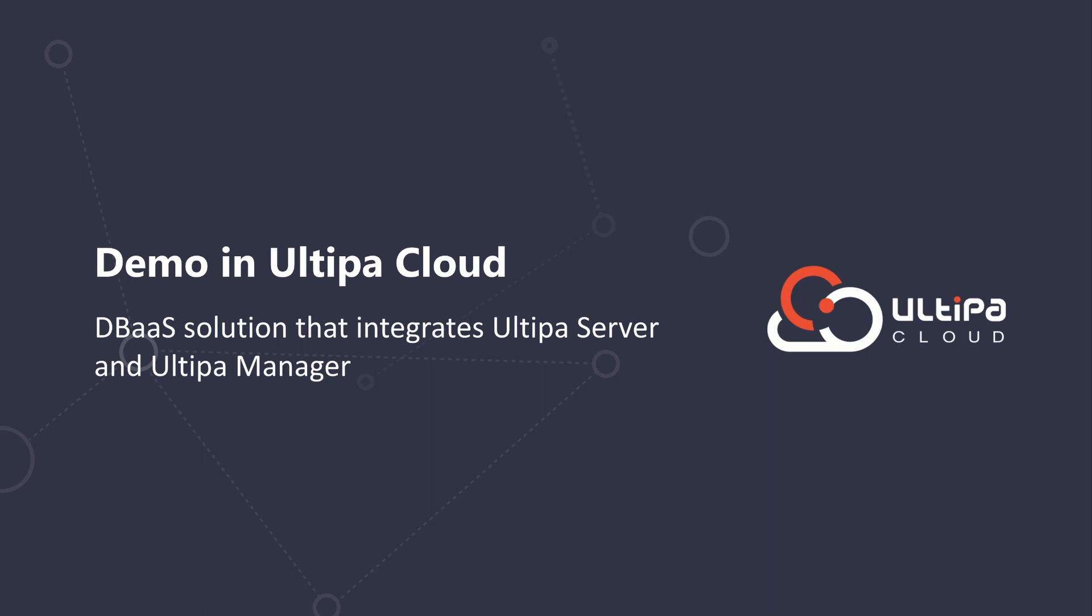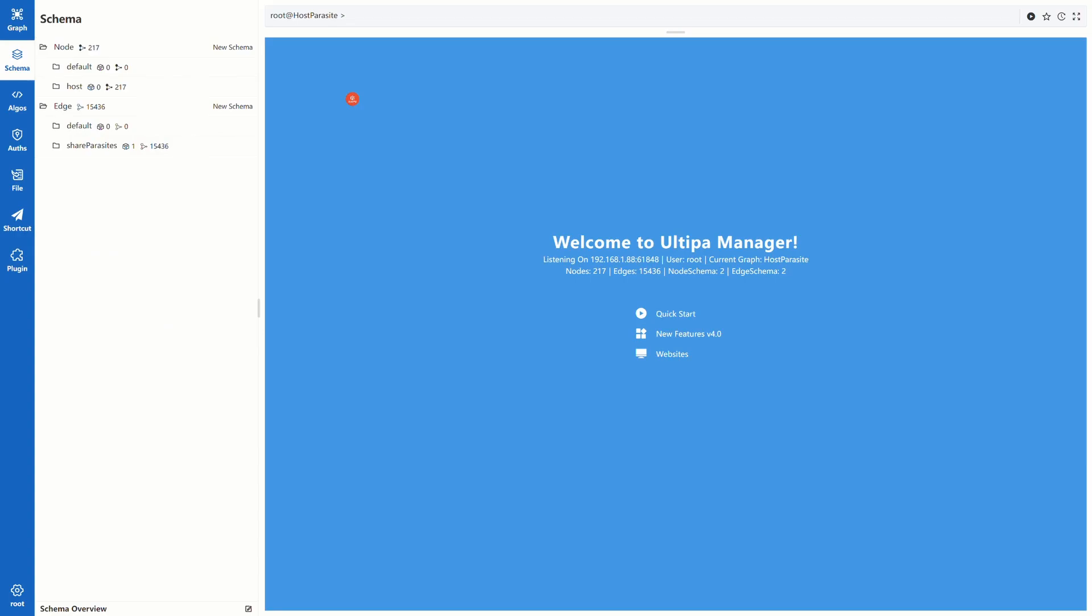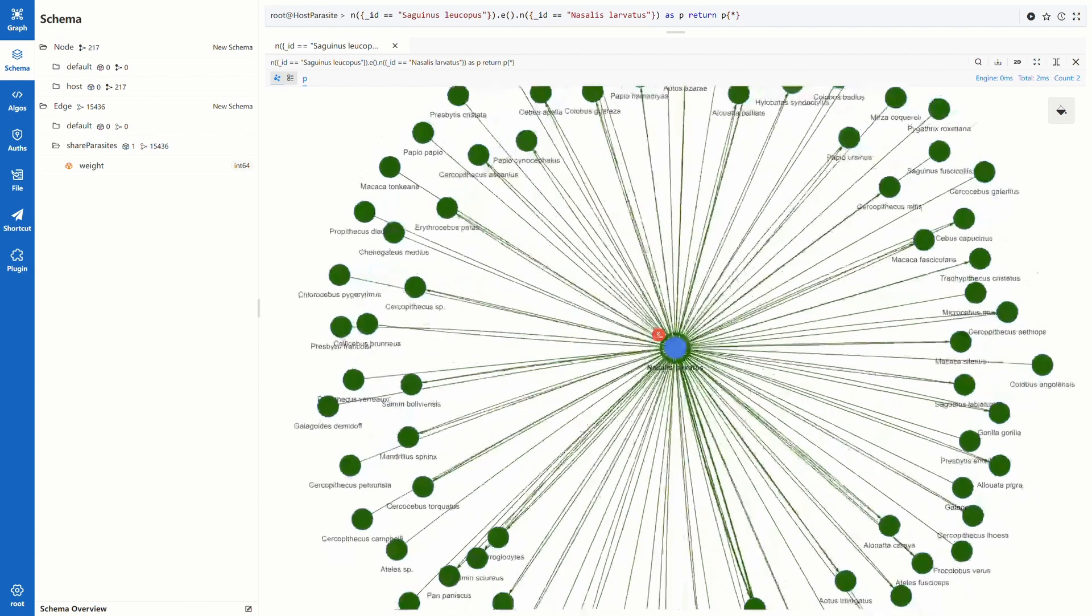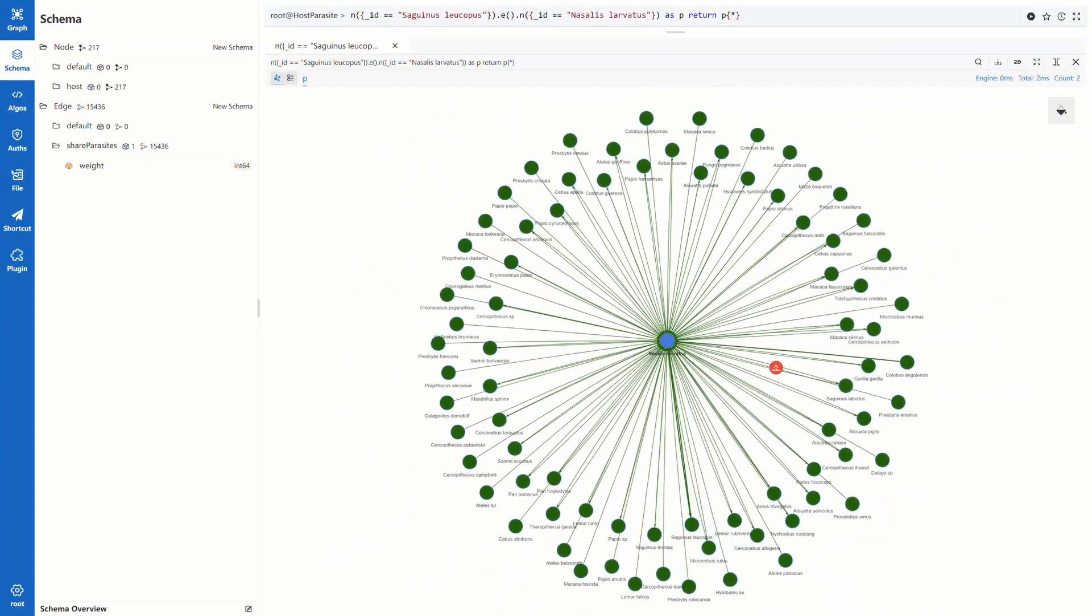Let's switch to Ultipa manager. This network is already imported. It has node schema host and edge schema share parasites with the property weight. Let's check the two hosts we just saw. Use a named path template. And we can see there are two edges between them, both with weight of 3. If we spread from one host, we can see the other hosts that share parasites with it.